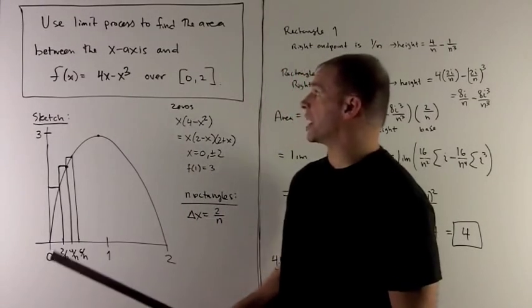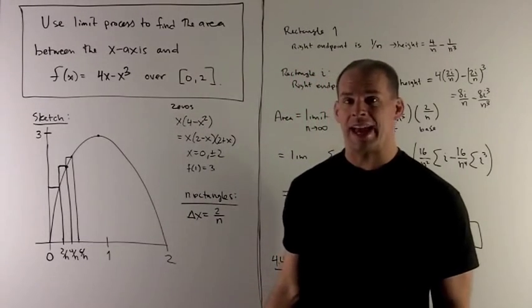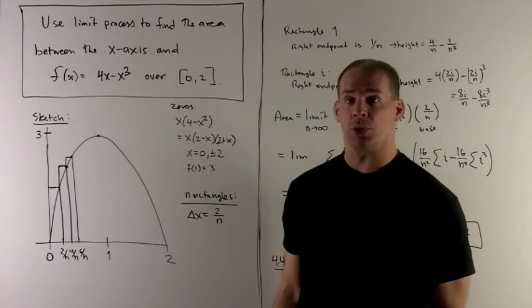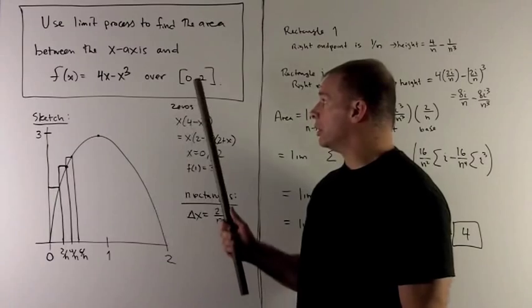We want to use the limit process to find the area between the x-axis and the function 4x minus x cubed over the interval 0, 2.